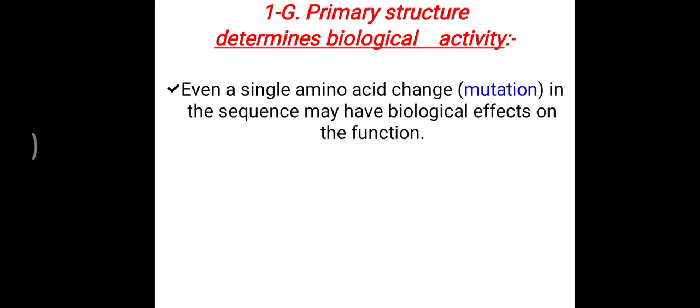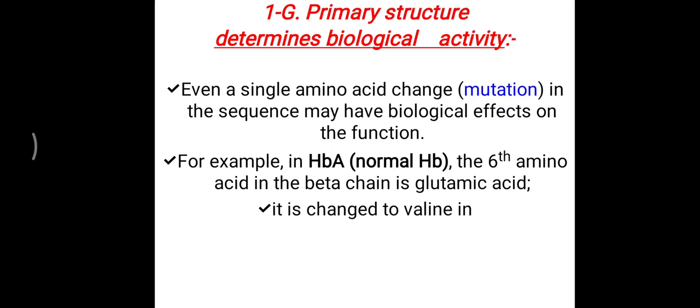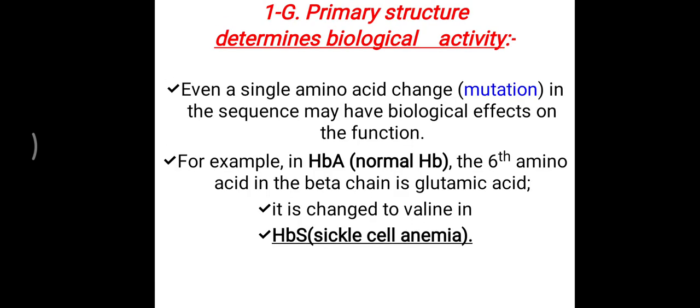Lastly, an important point in the primary structure is biological activity. Even a single amino acid change or mutation in the sequence may have a profound biological effect. For example, in adult hemoglobin (HbA), the 6th position of the beta chain normally contains glutamic acid. If this is changed to valine — another amino acid — it creates sickle cell anemia.